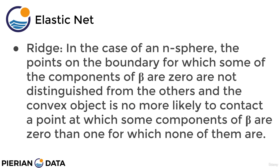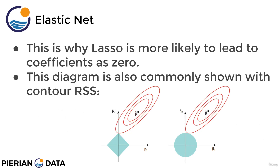This is unlike ridge, which is the case of an n-sphere or hypersphere — the points on the boundary for which some components of beta are zero are not distinguished from the others. The convex object is no more likely to contact the point at which some components of beta are zero than one for which none of them are. So this is why ridge is not going to produce coefficients that result in zero. While we drew the RSS lines as straight lines, people often also diagram them as contour lines — to the same effect where you're going to hit one of the corners in lasso, making one of the coefficients zero.